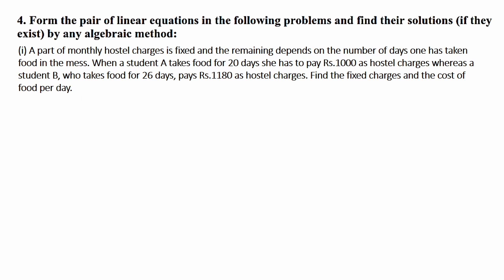Analyzing this question, there are two things: a fixed charge — meaning whether you use it or not, you have to pay it — and the number of days you are taking food from the hostel. The total amount is calculated as: fixed charge plus (number of days into daily food charge). Let us take the fixed charge as x and the cost of food per day as y.